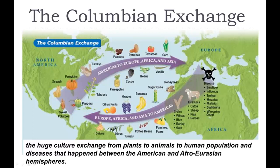They also brought disease: smallpox, influenza, typhus, measles, malaria, diphtheria, whooping cough. All of these had killed people in the Dark Ages in Europe — it still lingered, but everybody was immune. Here, the Native Americans weren't immune, and it killed large populations of them. It was a huge cultural impact. Europeans also took Native Americans back to Europe to show off, introduce to the new world, learn the language, and then come back over.